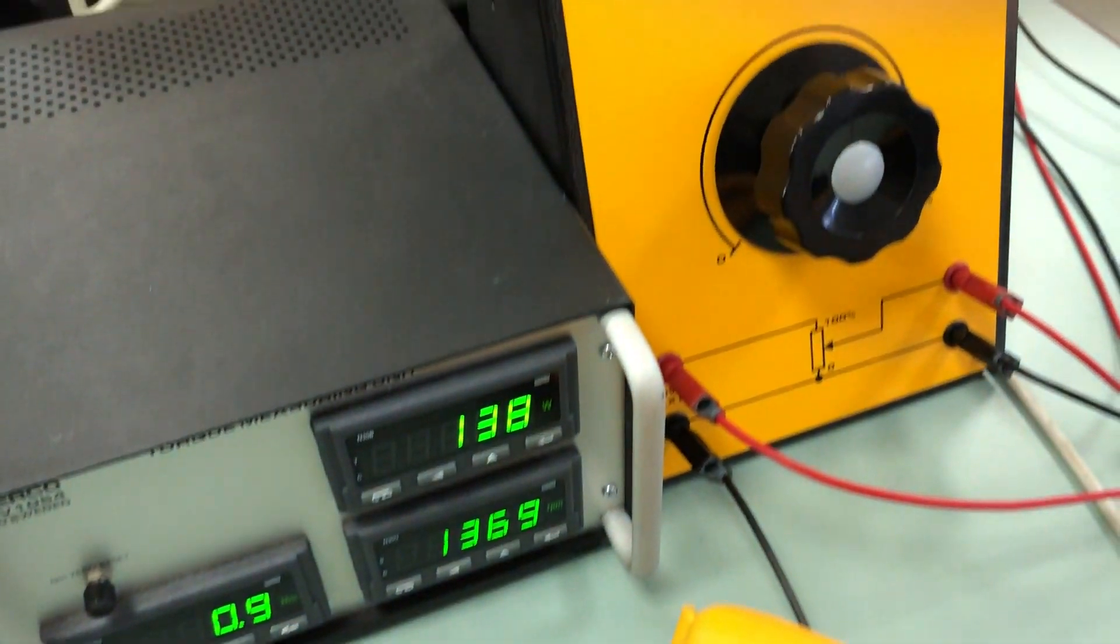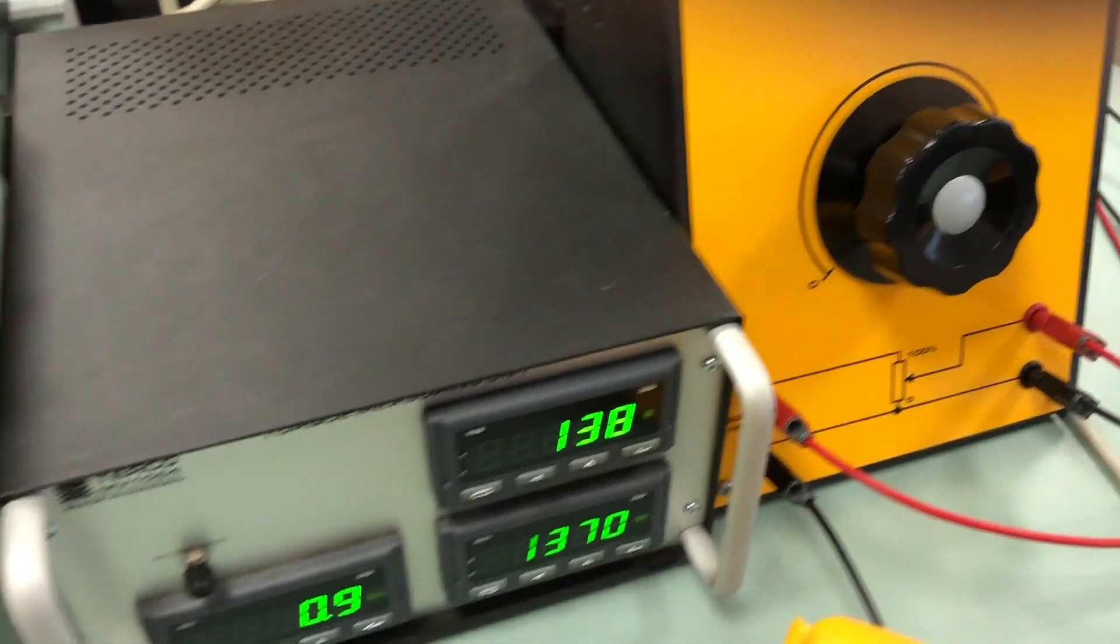So the armature current has to move up. You can see, even maxing out the field stat, the field current, it's not sufficient to give us the 1.5A.